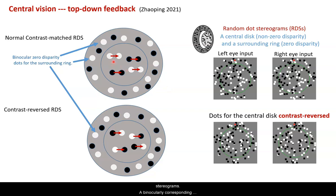A binocularly corresponding pair of dots are depicted by an arrow pointing from the right eye dot to the left eye dot, and they are called homo pairs or hetero pairs.